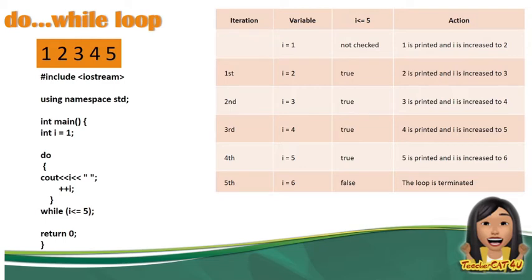Since 2 is less than 5, if you notice, before checking the condition, it already displayed 1. Then it increased I to 2. Now checking the variable, I equals 2, which is still true. So it will print 2, 3, 4, 5. That's the difference from while loop.